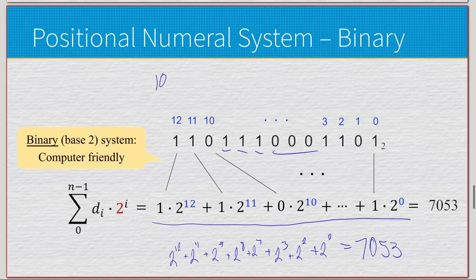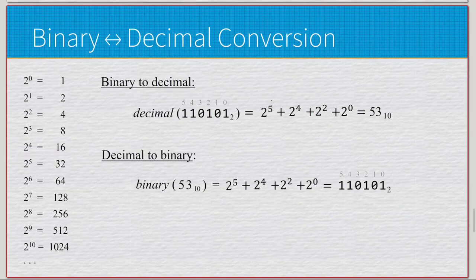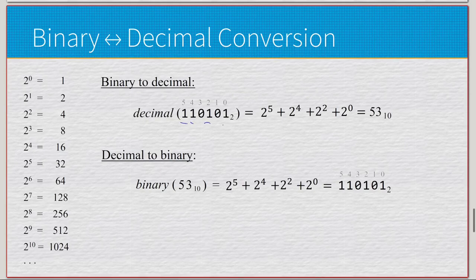So we started with 1101110011011 and did the positional numeral system in reverse, ending up with 7,053 — converting that binary value to its decimal value. We can also do it the other way around. Doing binary to decimal is the same thing as what we just did: for 110101, we have positions 0 through 5, so we get 2^5 + 2^4 + 2^2 + 2^0, add all that together, and end up with a value of 53.